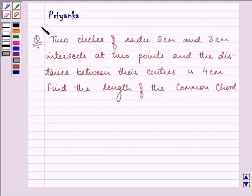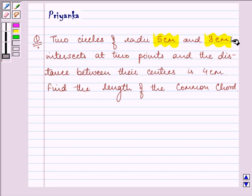Hello and how are you all today? My name is Priyanka and let us discuss this question. It says two circles of radii 5 cm and 3 cm intersect at two points and the distance between the centers is 4 cm.